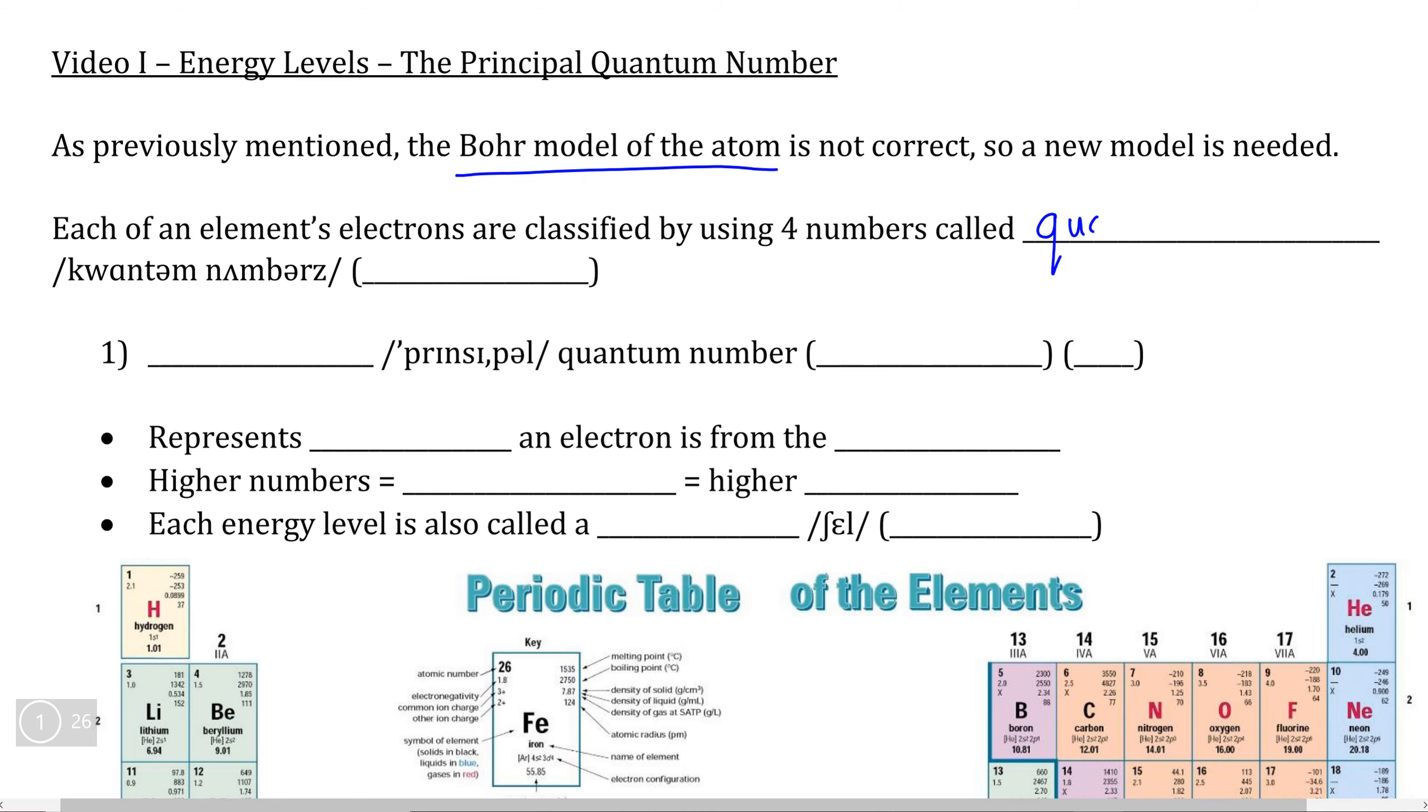In order to understand how our new model works, we need to understand something called quantum numbers, which are a set of four different numbers that are used to describe different aspects about an element's electrons. The first of which we're going to examine is called the principal quantum number, represented by the letter n.